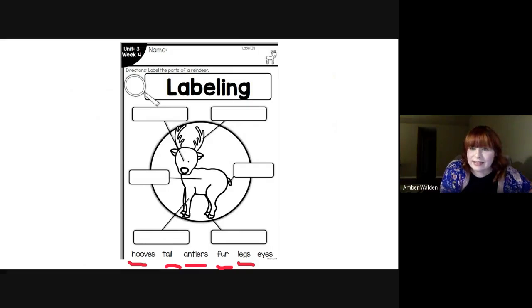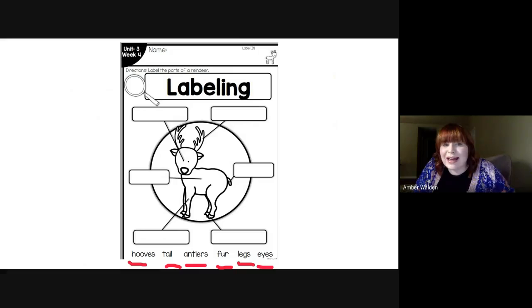This word is legs. So you're going to write this word in the box that points to the legs. And the last word is eyes. So you're going to write eyes where the box is pointing to the reindeer's eyes. If you forget what those words are, you can watch the video again and listen to Mrs. Wallen say them, or you could ask your grownup for help. I hope you guys have a great day. Let me know if you have any questions. See you soon.